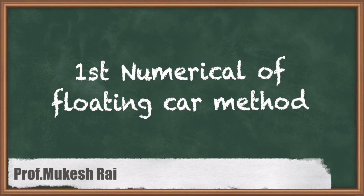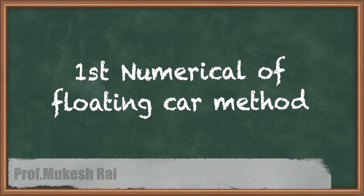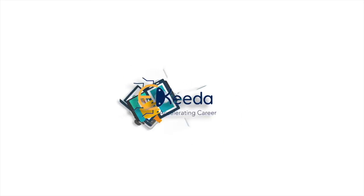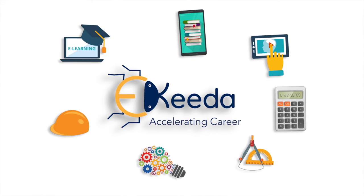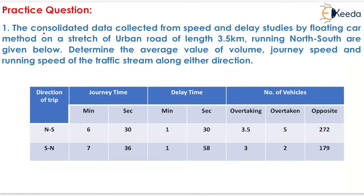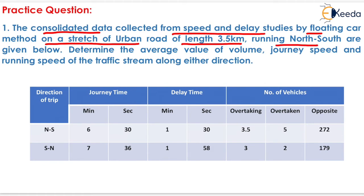Hello students, today we are going to solve the first numerical of the Floating Car Method. The question states: consolidated data collected from a speed and delay study by the floating car method on a stretch of urban road of length 3.5 km running north-south are given below. Determine the average value of volume, journey speed, and running speed of the traffic stream along either direction.